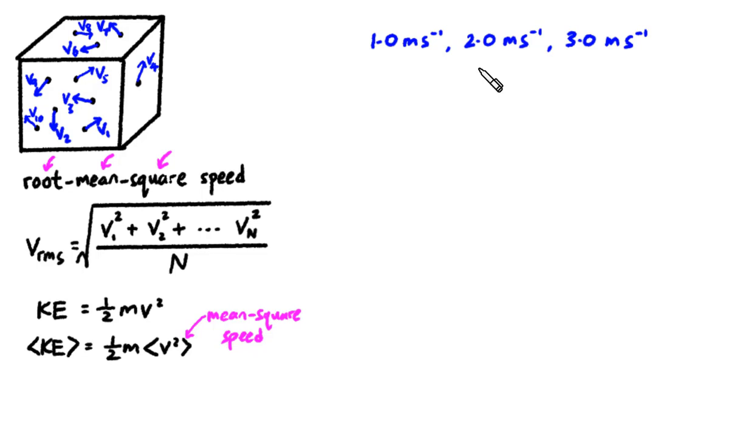Take for example, if I have 3 gas particles with speeds 1, 2 and 3 meters per second. A true gas would of course have godzillion number of gas particles, but I'm just trying to illustrate the idea. So 3 particles is enough.